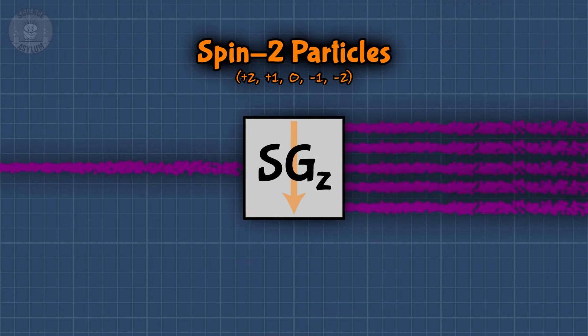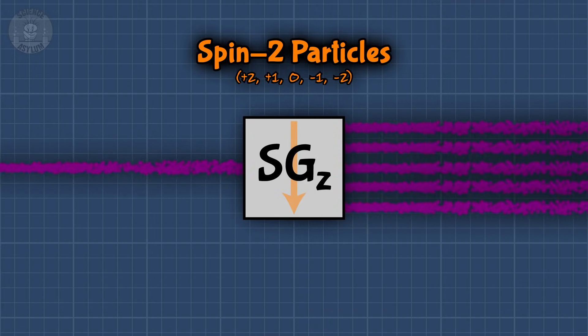Spin two particles are separated into five groups, and so on. Of course, this only works if the particle has charge on a fundamental level. If it doesn't, like the photon, we have to be a little more creative.